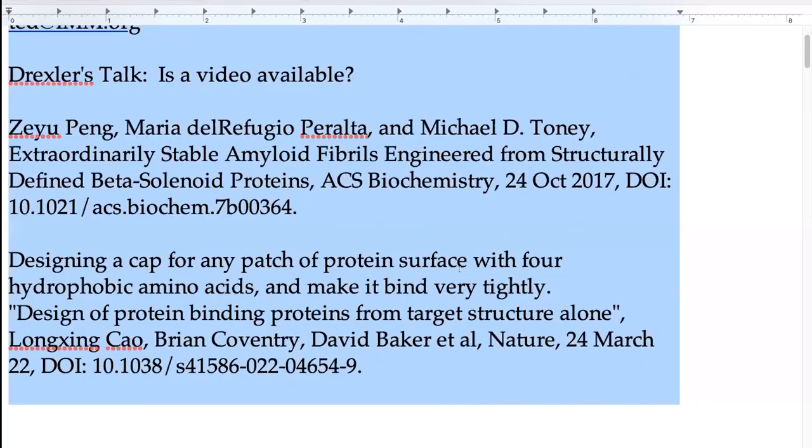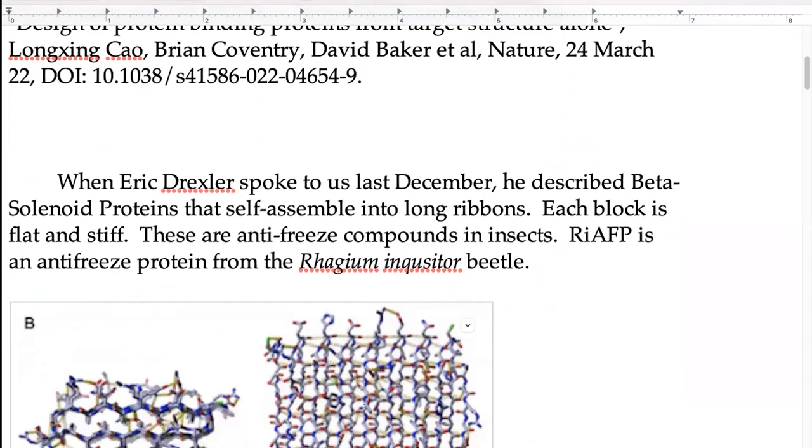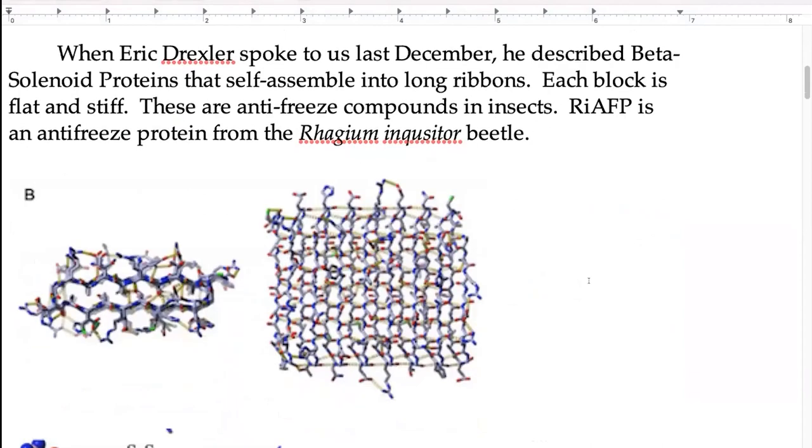I'm pasting some references into the chat so I don't have to tell you them later. I'm going to share my screen. Can anybody see my screen? Great. So last November or December, Eric Drexler spoke here and talked about building blocks made out of beta solenoid proteins that can be assembled into long ribbons.